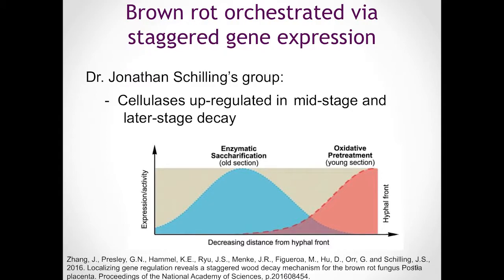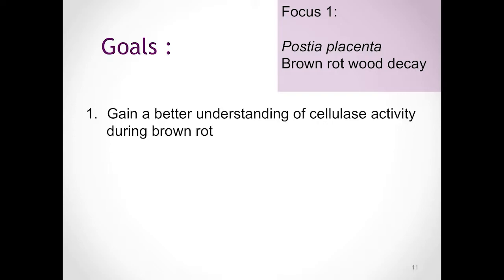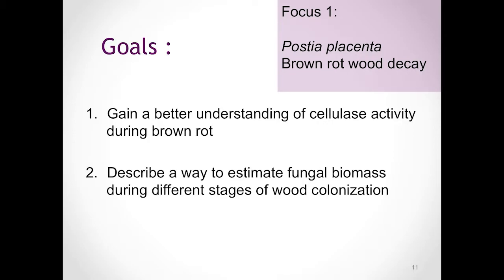Even though we know this much about brown rot decay, it is still necessary to do a bit more research to see what is actually happening at a cellular level — how do these cellulases act at a cellular level? For this reason, I would like to gain a better understanding of cellulase activity during brown rot at the cellular level. In addition to that, I would like to devise a better way to estimate fungal biomass during the different stages of wood colonization and decay.